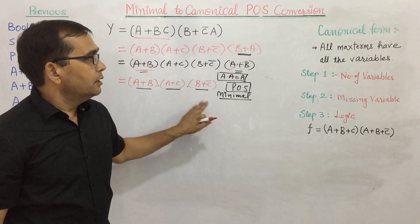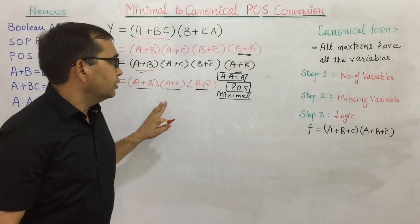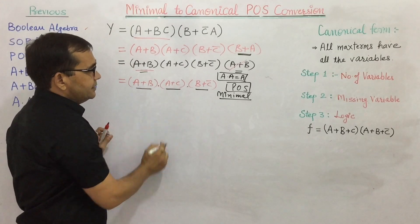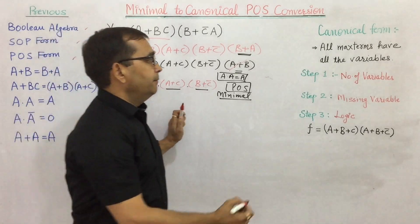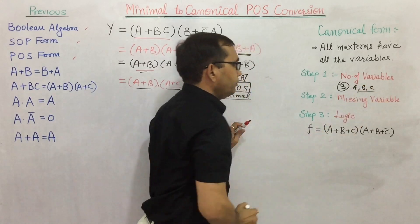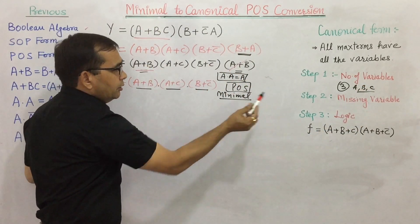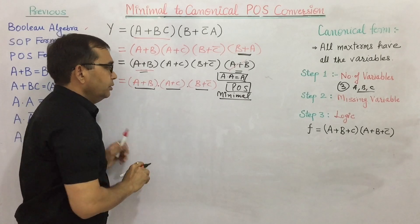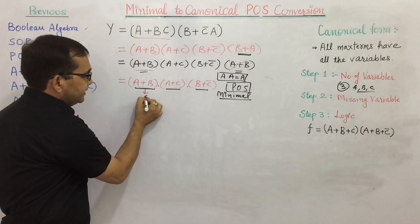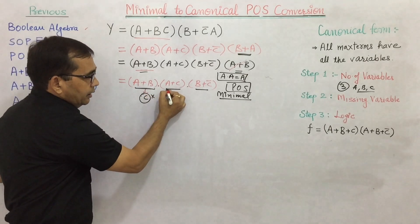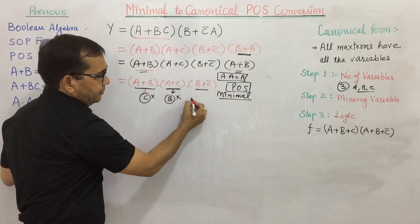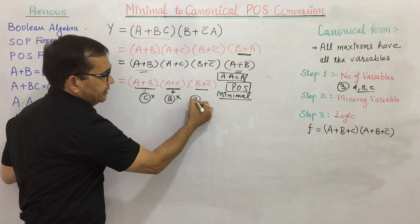Now we will convert this minimal POS form into standard or canonical POS form by following some steps. In step 1, we check the number of variables: A, B, and C — so 3 variables are there. In step 2, we check the missing variables. In the first max term (A plus B), C is missing. In the second max term (A plus C), B is missing. In the third max term (B plus C bar), A is missing.